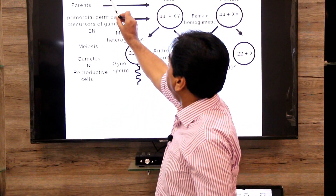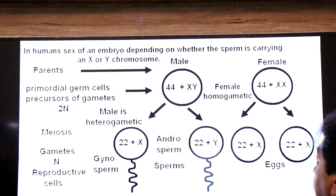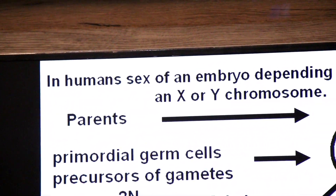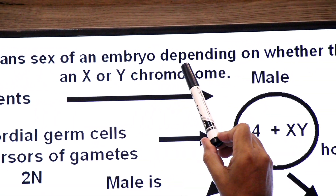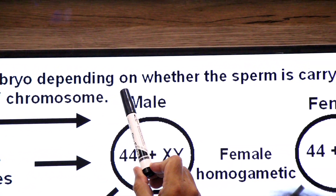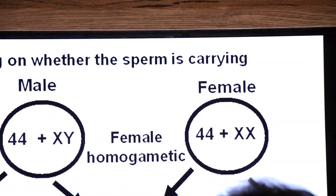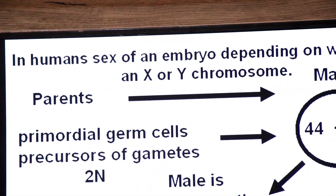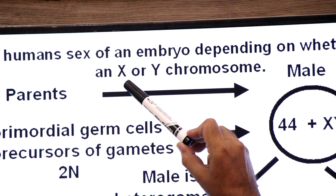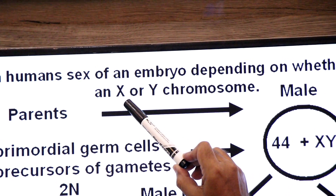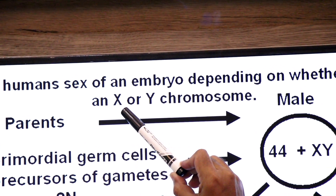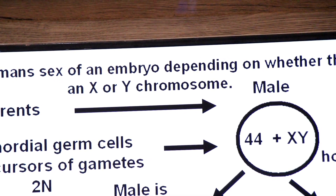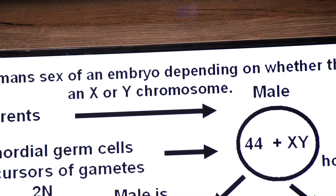In humans, the sex of an embryo depends on whether the sperm is carrying an X or Y chromosome. The sperm carrying X is called gynosperm and the sperm carrying Y is called androsperm.